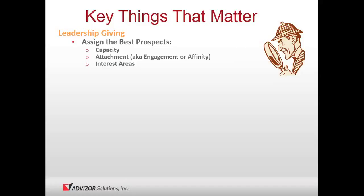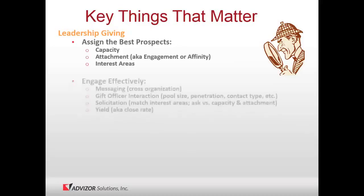Interest areas often get left off but are really key. If someone's interested in science, they're more likely to give to it. Good ways to determine interest include tracking which newsletter articles people click on, conducting reunion surveys, and asking questions about interest areas to align fundraising efforts. These three things — capacity, engagement, and interest — are the big three, with a bunch of nuance and granularity underneath.